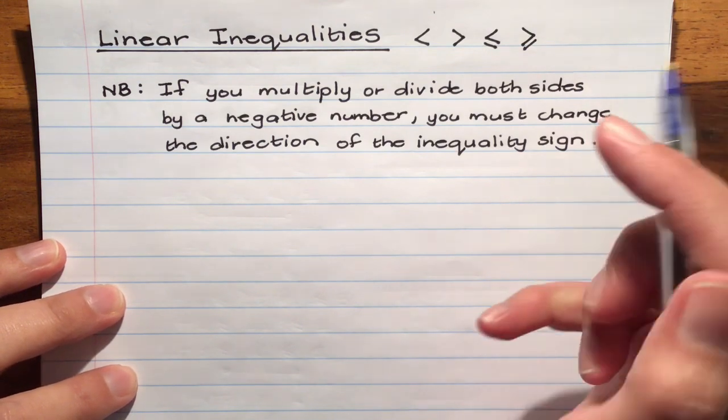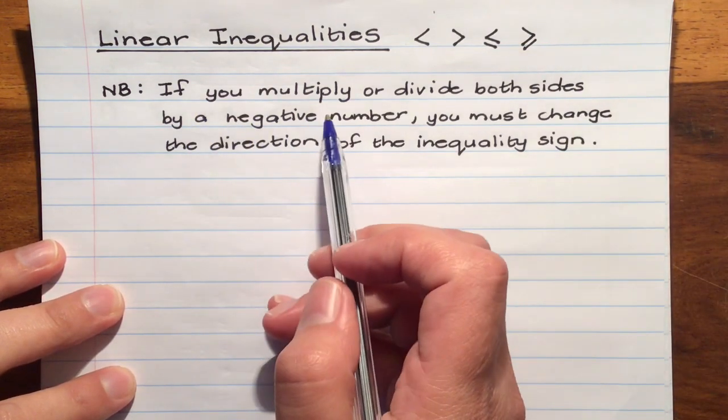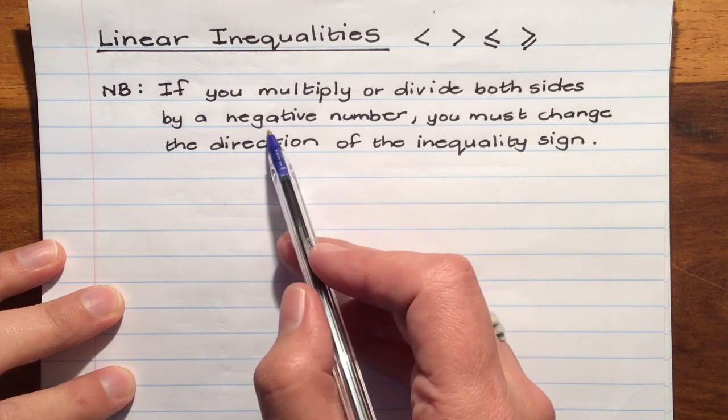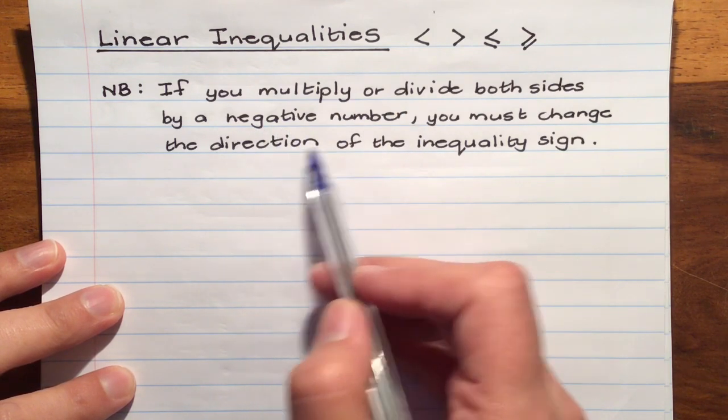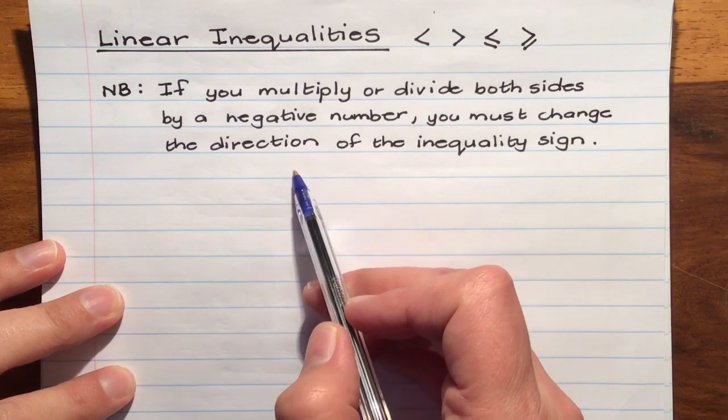In general we can solve these inequalities in exactly the same way that we would solve linear equations with one exception and this is it. If you're going to multiply or divide both sides by a negative number, you must change the direction of the inequality.